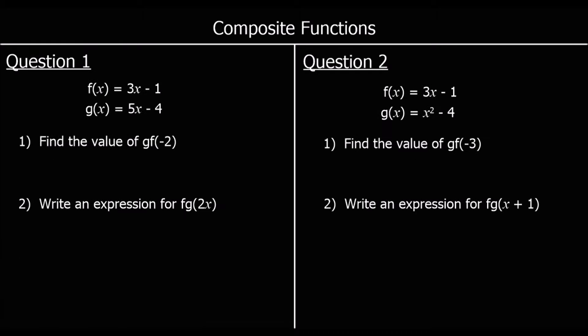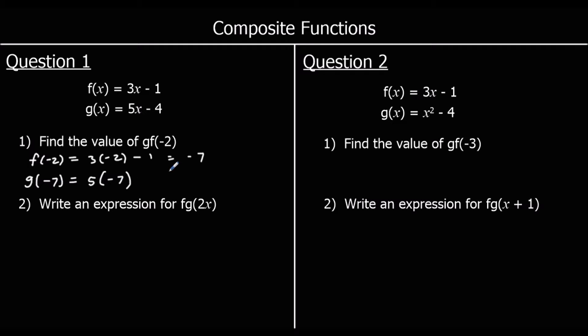To finish up, we've got two more questions with f of x equals 3x minus 1 and g of x equals 5x minus 4. Find the value of gf of negative 2: put negative 2 into f. f of negative 2 is 3 times negative 2 minus 1, which is negative 6 minus 1, equals negative 7. Then g of negative 7 is 5 times negative 7 minus 4, which is negative 35 minus 4, equals negative 39.